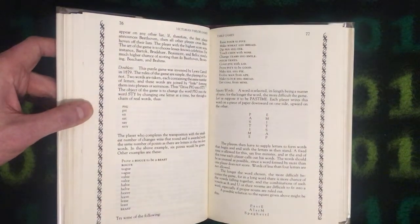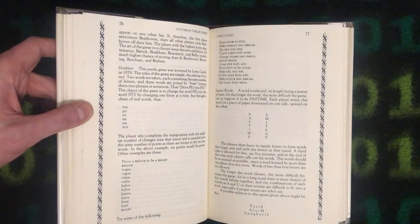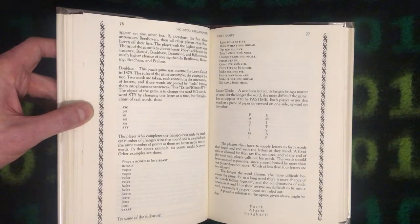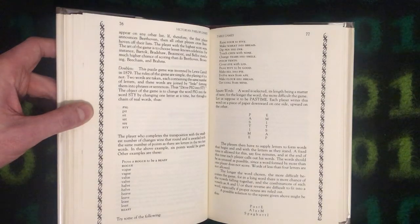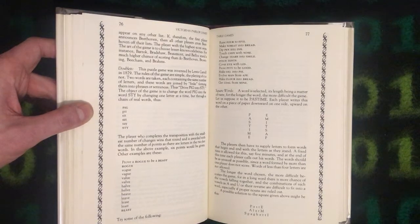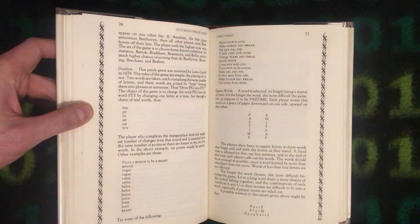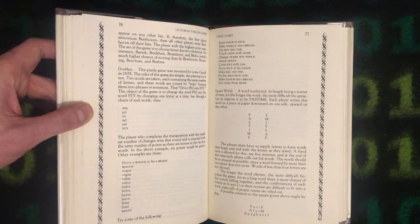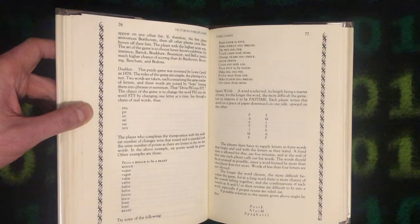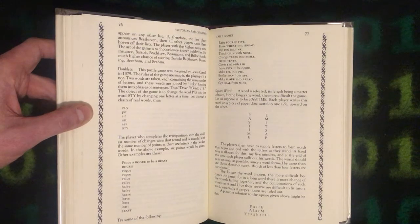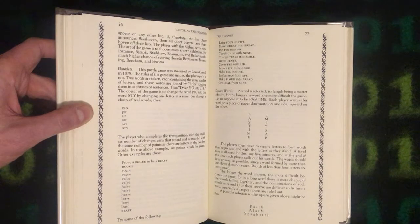Raise four to five. Make wheat into bread. Dip pen into ink. Touch chin with nose. Change tears into smile. Pitch tents. Cover eye with lid. Prove pity to be good. Make eel into pie. Evolve man from ape. Make flour into bread. Get coal from mine.